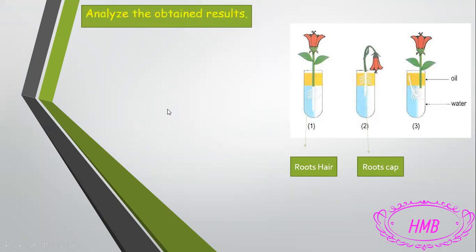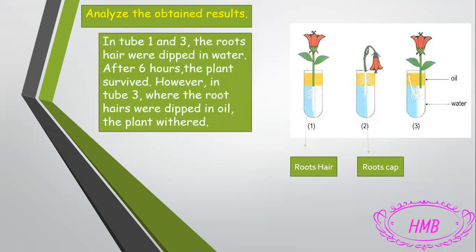The second question: analyze the obtained results. To analyze, we write our observations and relate them to the conditions. In tube one and tube three, the root hairs were dipped in water, and after six hours plant one and plant three survived. In tube two, the root hairs were dipped in oil, and after six hours the plant withered.